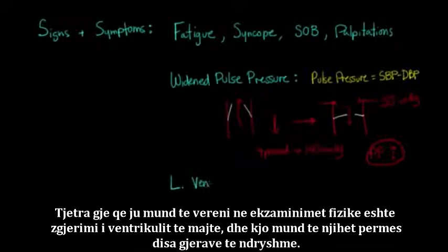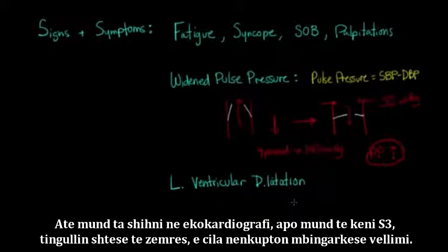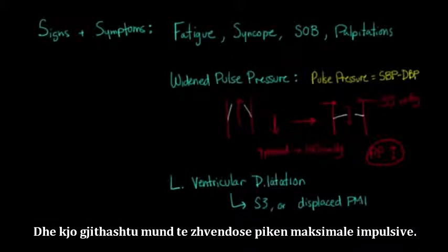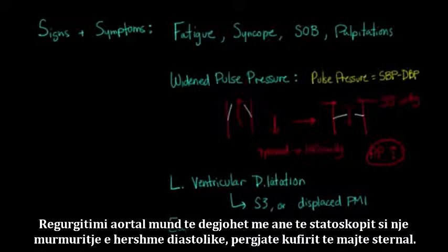Another thing you may notice on physical exam is left ventricular dilatation. This can be recognized on echocardiography, or by an S3 — an extra heart sound signifying volume overload — as the ventricle receives too much blood back from the aorta. This may also displace the PMI; unlike in LVH where the PMI moves medially, in volume overload the PMI actually moves laterally and possibly inferiorly. Aortic regurgitation can be heard on auscultation as an early diastolic murmur along the left sternal border.